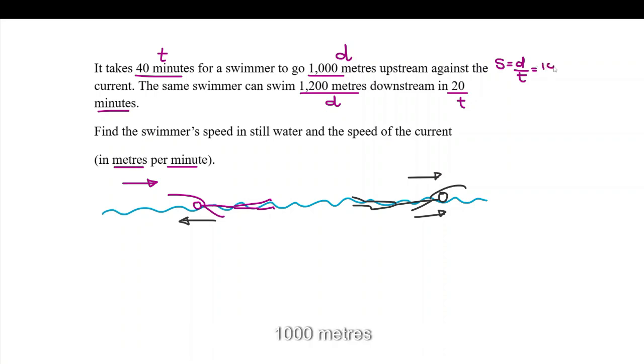So, if you do 1000 meters divided by 40 minutes, obviously, I can see it's 25 meters per minute. Now, this is the overall speed when it's upstream. So, the overall speed here upstream is 25 meters per minute.